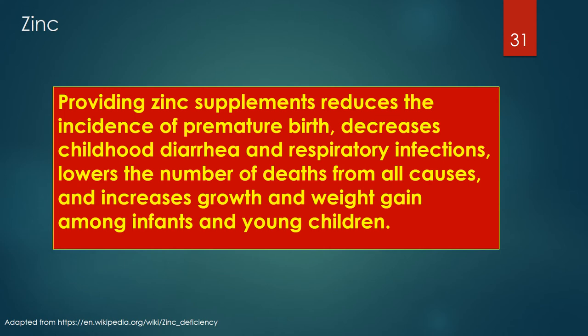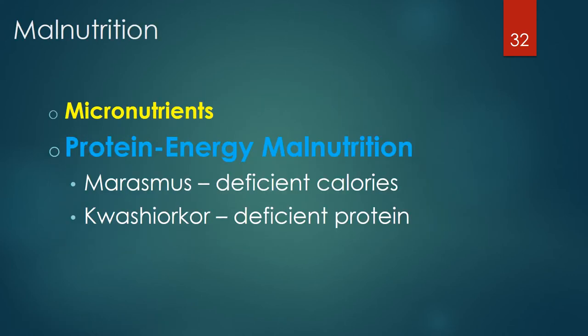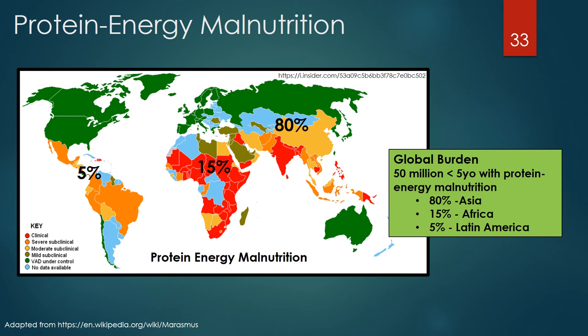Marasmus is primarily due to a general deficiency of sources of energy or calories, whereas kwashiorkor is due to deficient protein in the diet. There are approximately 50 million children less than 5 years old who have protein-energy malnutrition worldwide. Of the malnourished children in the world, approximately 80% live in Asia, 15% in Africa, and 5% in Latin America.